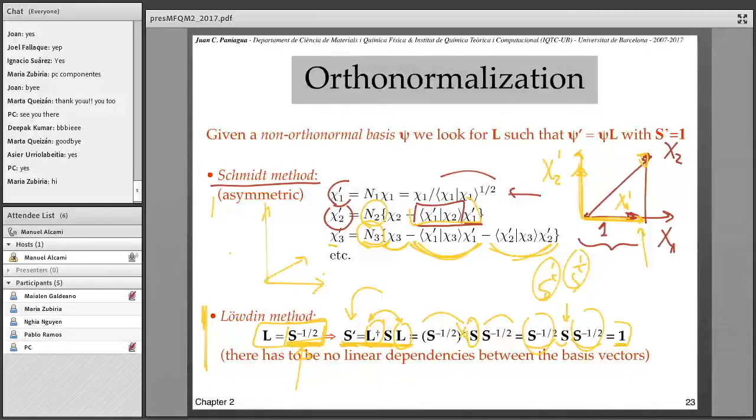And the idea was that in order to obtain an orthonormal basis set, you have to look for a transformation L such that the new overlap matrix is the identity matrix as corresponds to any orthonormal basis set. In Löwdin method, this was the choice, and we saw that it works, but this has a little problem.